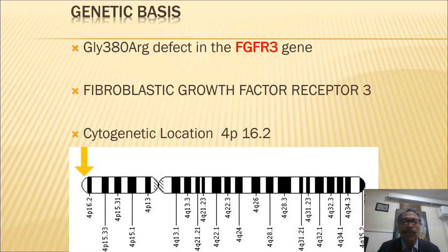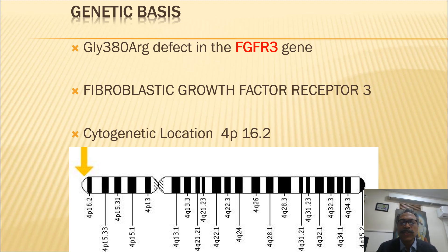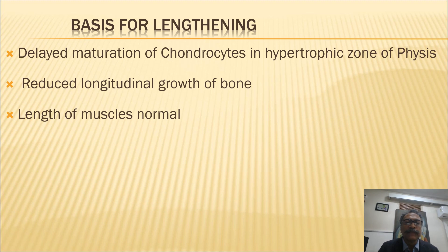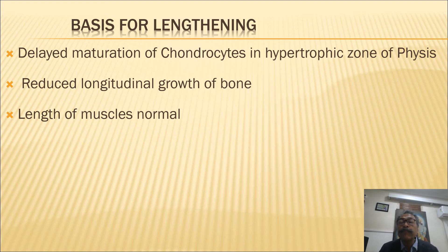The genetic basis for dwarfism is a defect in the FGFR3 gene — the fibroblastic growth factor receptor 3 gene — and the cytogenetic location of this gene has also been determined. The clinical basis for lengthening arises from what we know about the disease process.